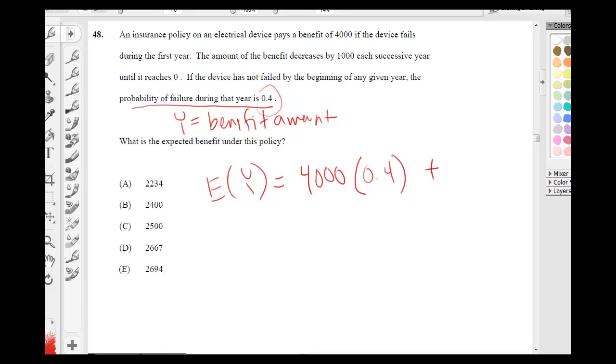If it fails in the second year, it's going to be $3,000 times the probability that it didn't fail in the first year times the probability that it did fail on the second year. And this is plus $2,000 times the probability that it didn't fail on the first and second year.